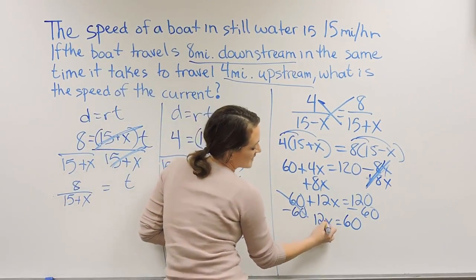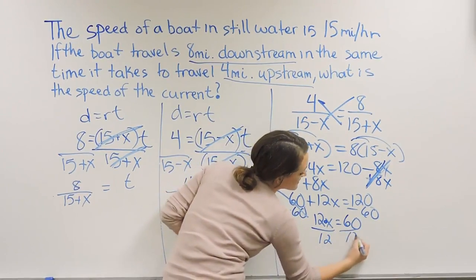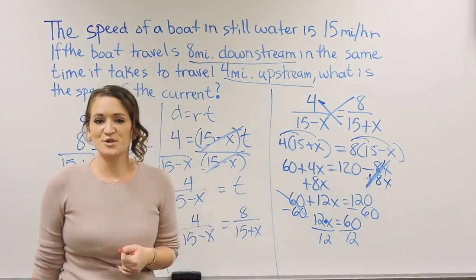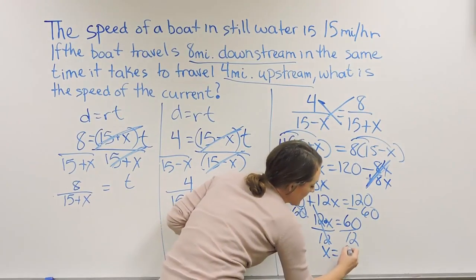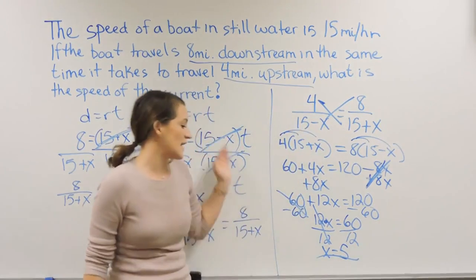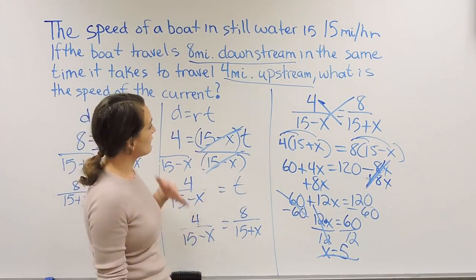Last step here, we have 12X. Remember, that is 12 times X. So the opposite of multiplication is division. So I'm going to divide both sides by 12, and I'm left that X is equal to 5.